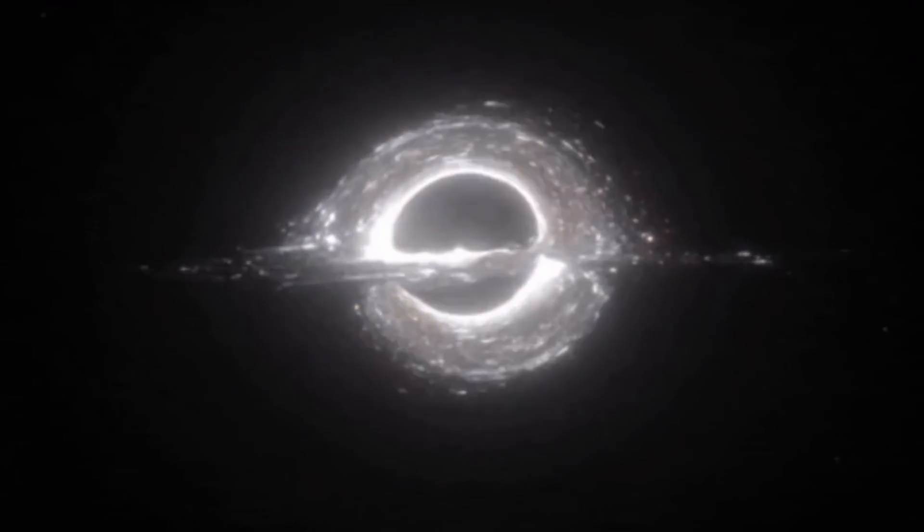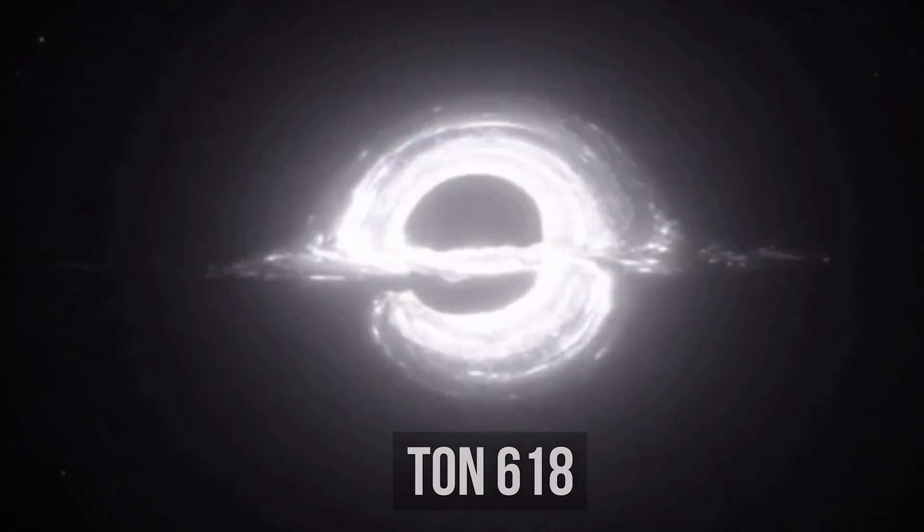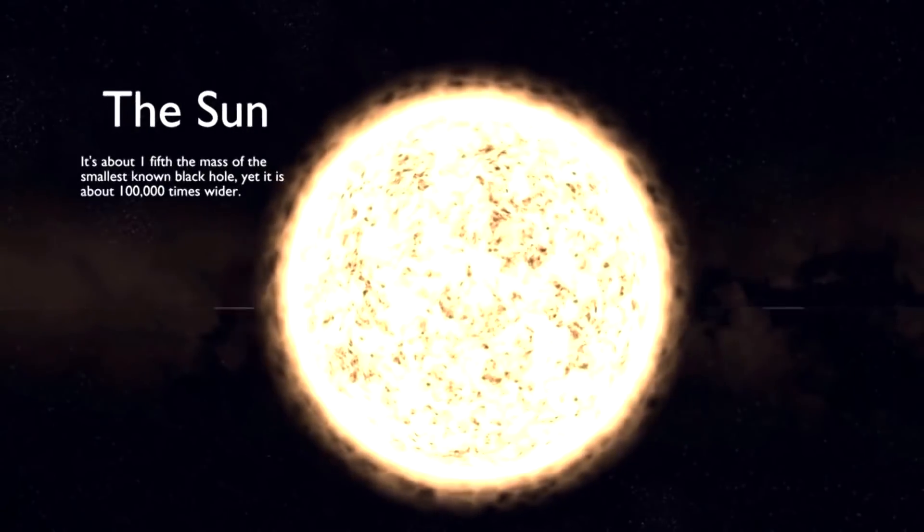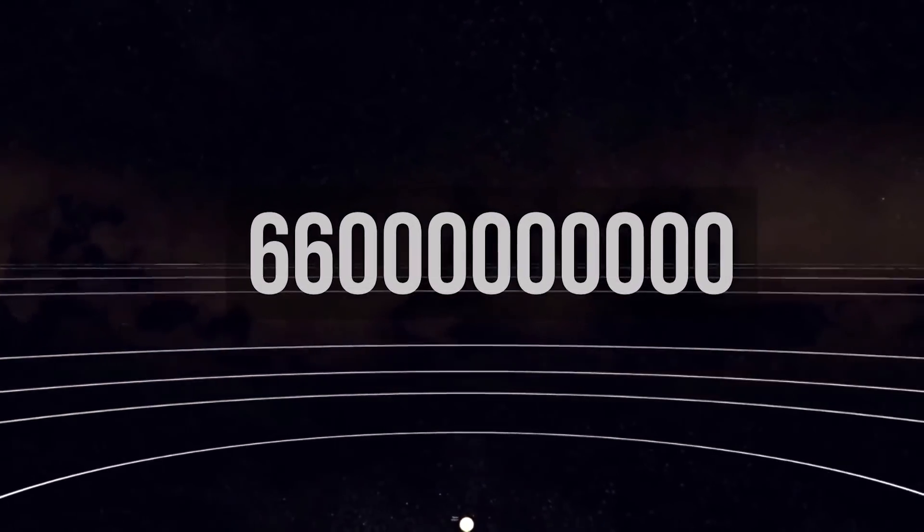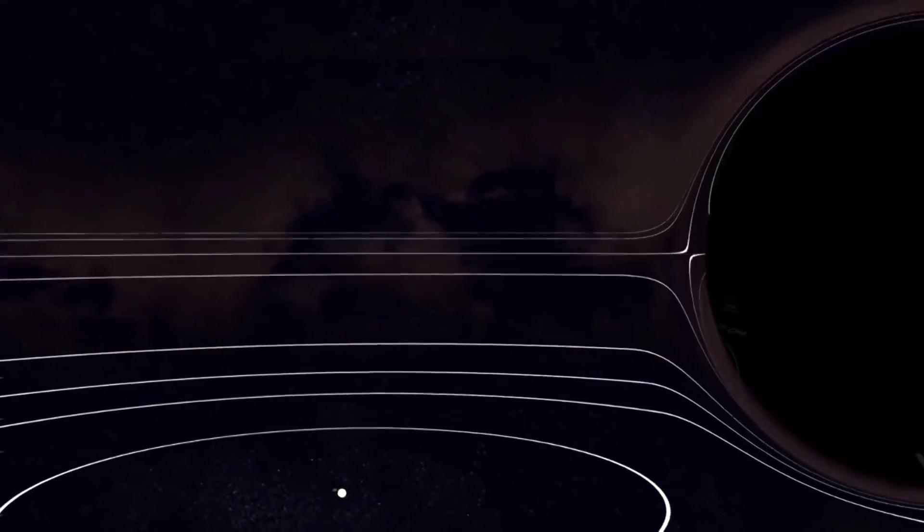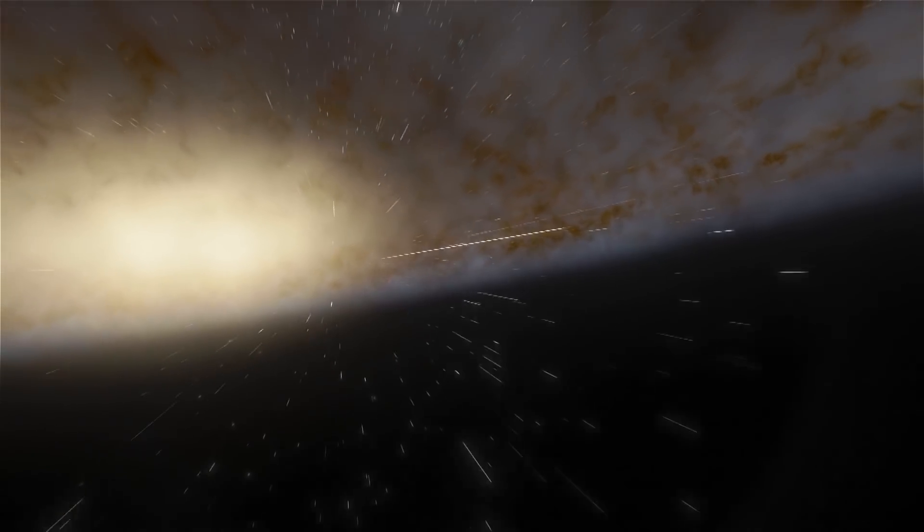Right now the title of the most giant black hole belongs to TON 618. Its weight is 66 billion times greater than that of the sun. It's hard to imagine a thing like this, right? But there are even more extensive objects in outer space.